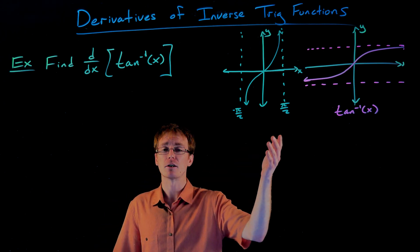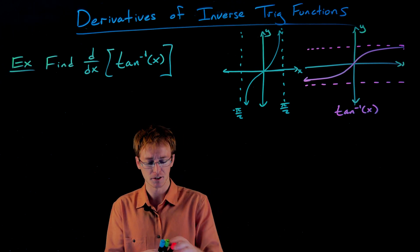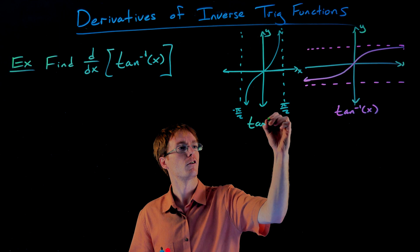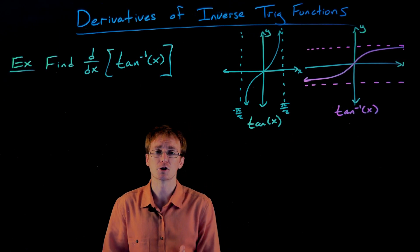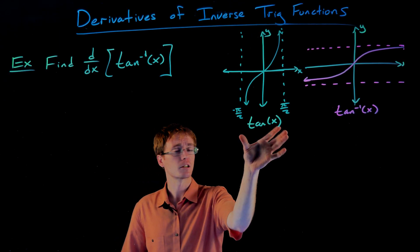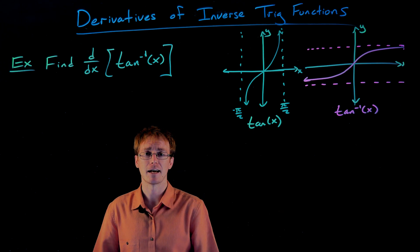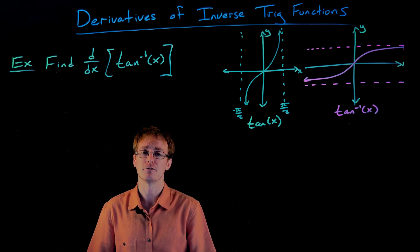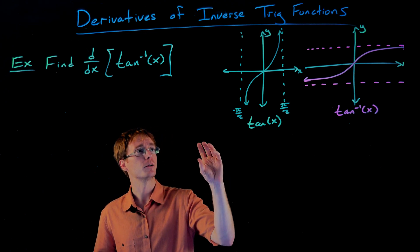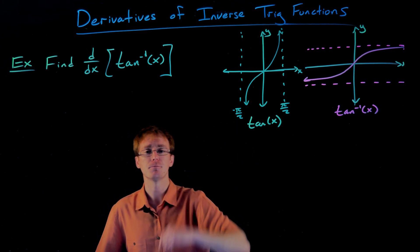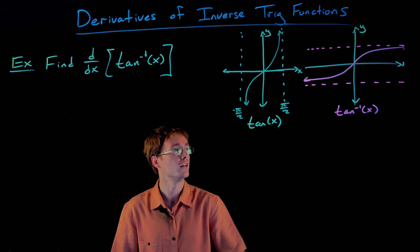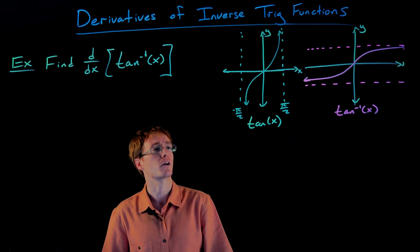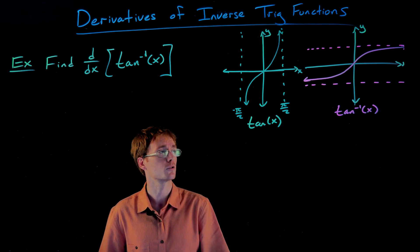Just like all of our inverse functions, it's undoing what the original function does. In green over here, I have the graph of our original tangent function. I actually restricted the domain of our tangent function to the interval that makes it one-to-one, just like how we had to do for our inverse sine function. And now if we reflect the graph of tangent over the line y equals x, we get the graph of our inverse tangent function. That reflection process is really what causes the domain and range to switch.